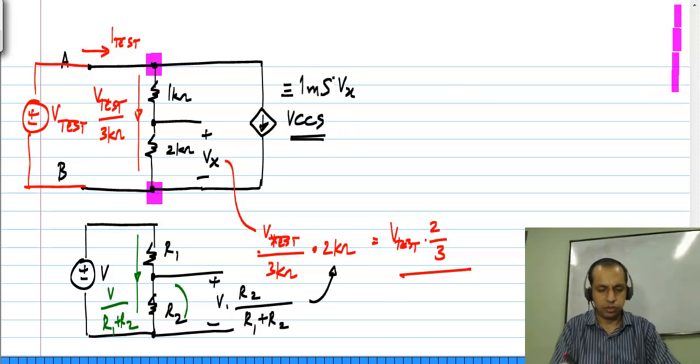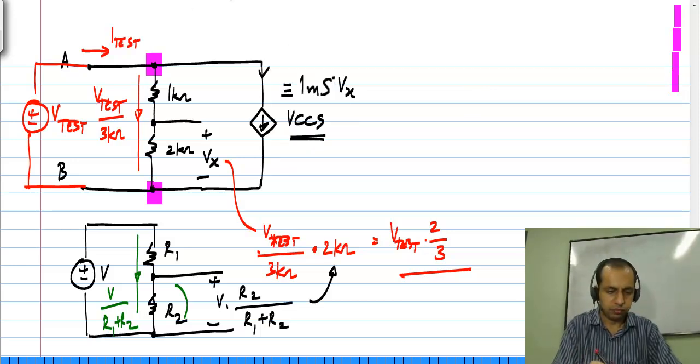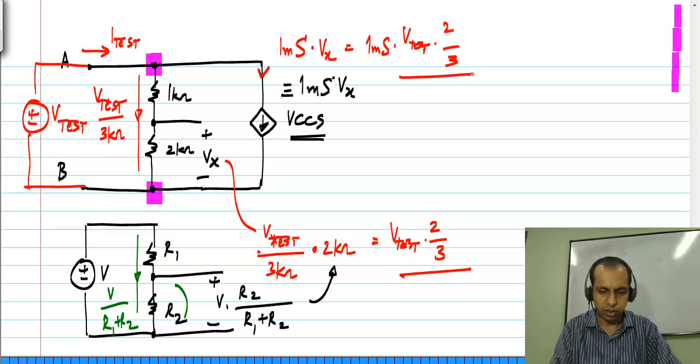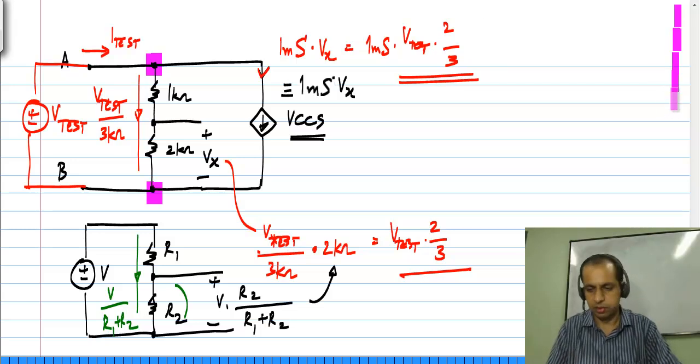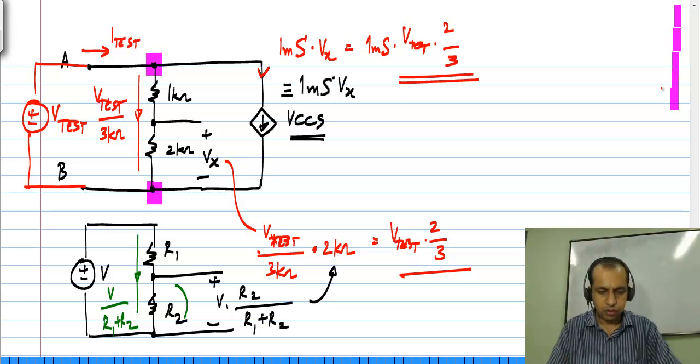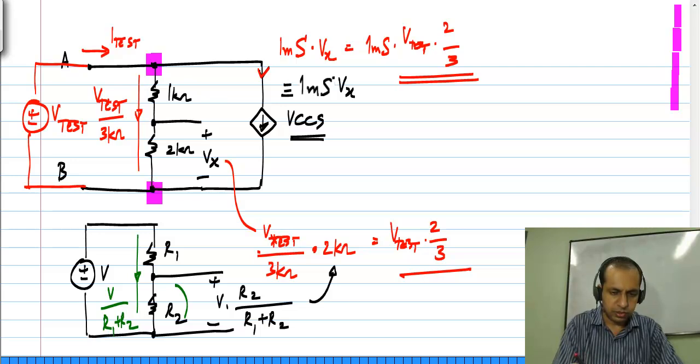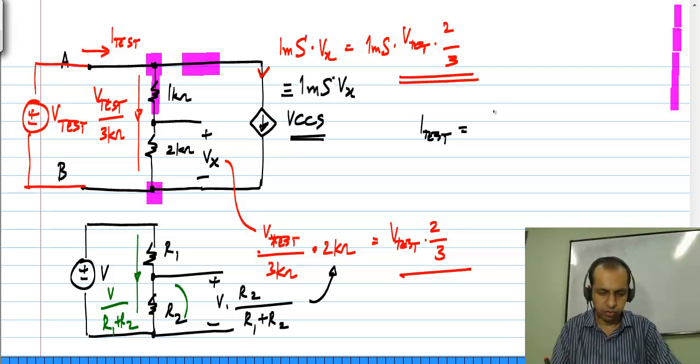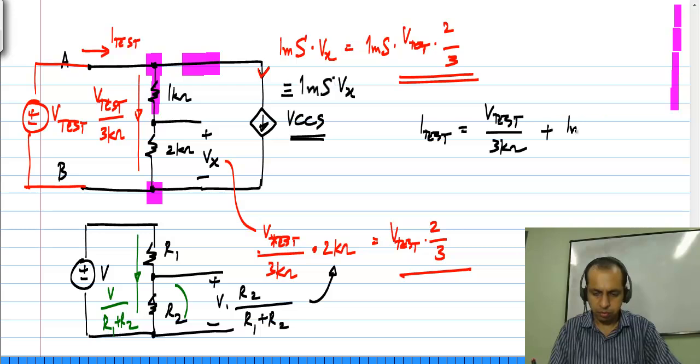Then this control current source draws a current which is basically 1 milli Siemens times Vx, which is 1 milli Siemens times V test times 2 by 3. All I did was to substitute the value of Vx in this place. So the total current I test is equal to the current flowing here plus the current flowing there. So I test will be equal to V test divided by 3 kilo ohm plus 1 milli Siemens times V test times 2 by 3.